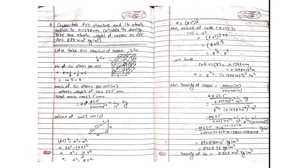Here we are calculating the density of copper. As we know, copper has a face-centered cubic, that is FCC structure. The question states copper has FCC structure, its atomic radius is 0.1278 nanometer, and we need to calculate its density. The atomic weight of copper is taken as 63.5, and the answer is 8.89 × 10³ kg per meter cube.